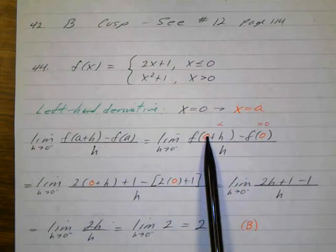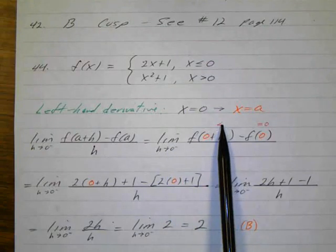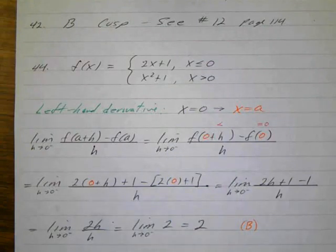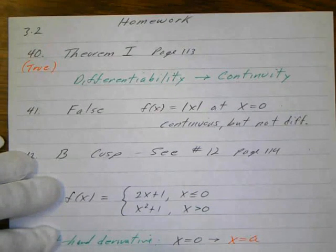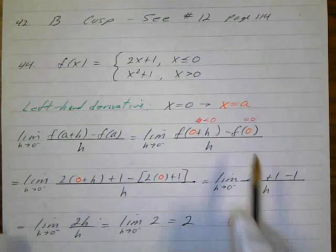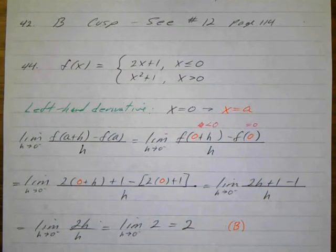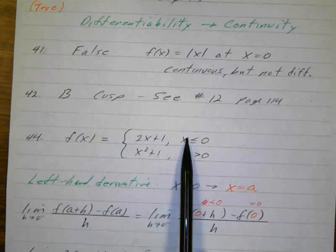And now remember this is going to be to the left of 0. If h approaches 0 from the negative direction, this will be less than 0, and this will be equal to 0. So if it's less than 0, I'm going to be using this function. If it's equal to 0, I'm using the same function, so it's going to be this.